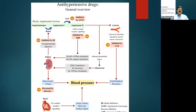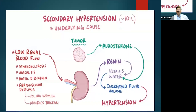Each antihypertensive drug class has a different mechanism of action. ACE inhibitors inhibit the conversion of angiotensin 1 to angiotensin 2. ARBs inhibit angiotensin 2. Calcium channel blockers reduce peripheral resistance. Diuretics decrease intravascular volume and thereby reduce blood pressure. Beta blockers decrease heart rate and are one of the pillars of treatment in heart failure.